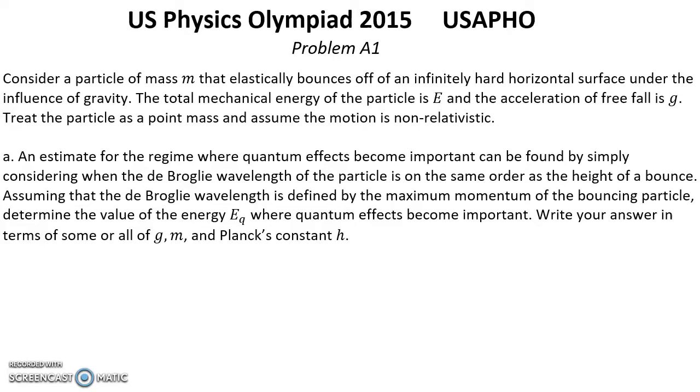Problem A. Consider a particle of mass M that elastically bounces off of an infinitely hard horizontal surface under the influence of gravity. The total mechanical energy of the particle is E and the acceleration of freefall is G. Treat the particle as a point mass and assume the motion is non-relativistic. Question A: An estimate for the regime where quantum effects become important can be found by simply considering when the de Broglie wavelength of the particle is on the same order as the height of a bounce. Assuming that the de Broglie wavelength is defined by the maximum momentum of the bouncing particle, determine the value of the energy E_Q where quantum effects become important.